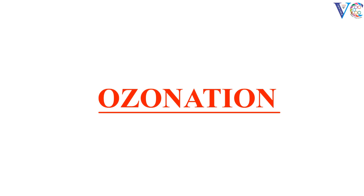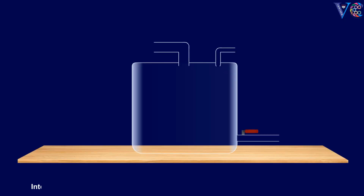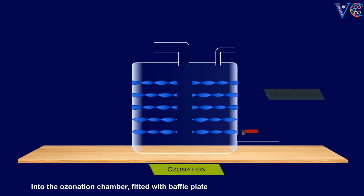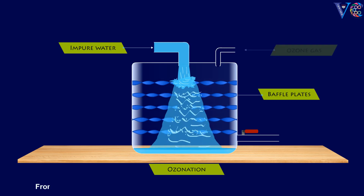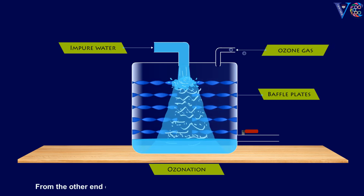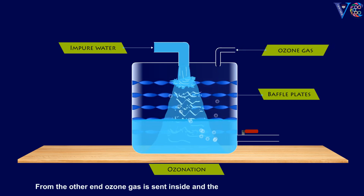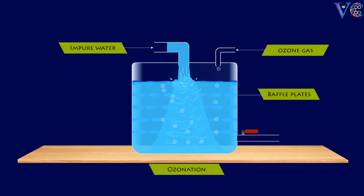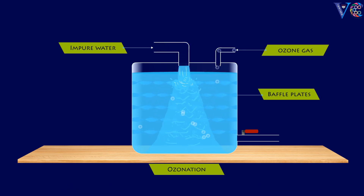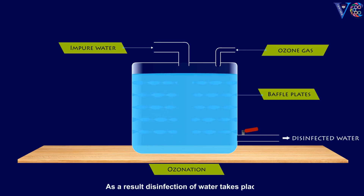Ozonation. Into the ozonation chamber fitted with baffle plates, from one end impure water is fed, from the other end ozone gas is sent inside, and the contents are mixed thoroughly. As a result, disinfection of water takes place.